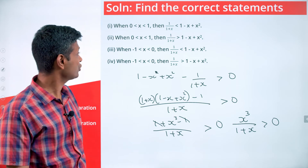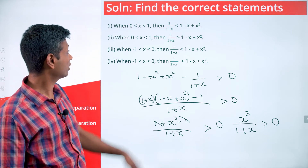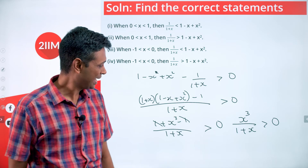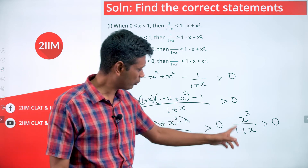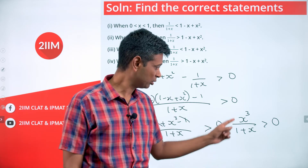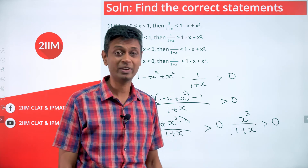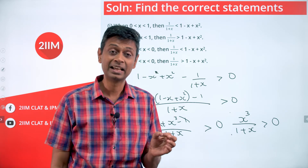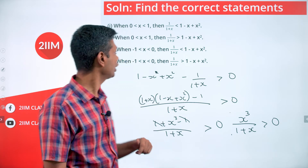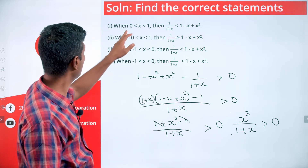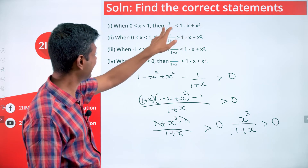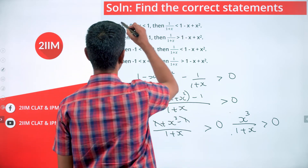The ranges we are talking about are 0 to 1 and -1 to 0. For x³/(1+x) > 0: in the range 0 < x < 1, x³ is positive and (1+x) is positive, so this holds good. Therefore, in the range 0 < x < 1, we have 1 - x + x² greater than 1/(1+x), so statement 1 is correct.